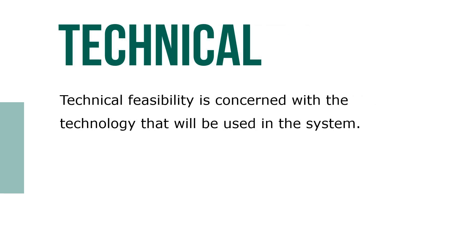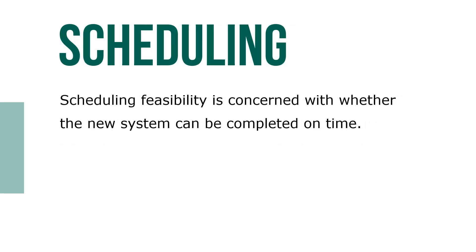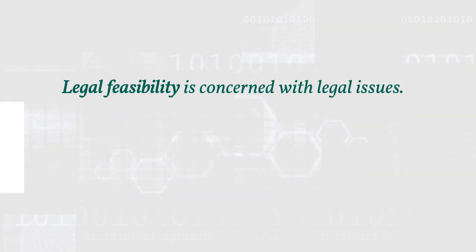Technical feasibility is concerned with the technology that would be used in the system. Operational feasibility is the measure of how well the proposed solution will work in the organization and how internal and external customers will react to it. Scheduling feasibility is concerned with whether the new system can be completed on time. Legal feasibility is concerned with legal issues.